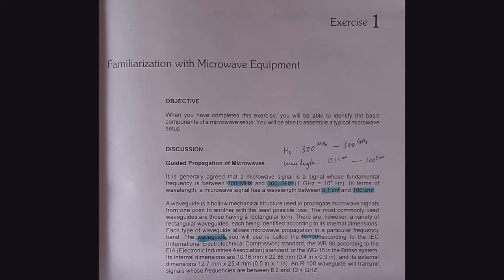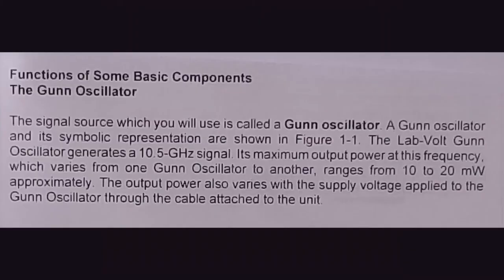The signal power range is 10 to 20 milliwatts. This amount of power might cause a dangerous effect on the human body, especially the eyes, so I recommend you not look through the gun oscillator while it is powered up. You should terminate the waveguide opening before powering up the setup. The waveguide used here can operate between 8.2 and 12.4 gigahertz.